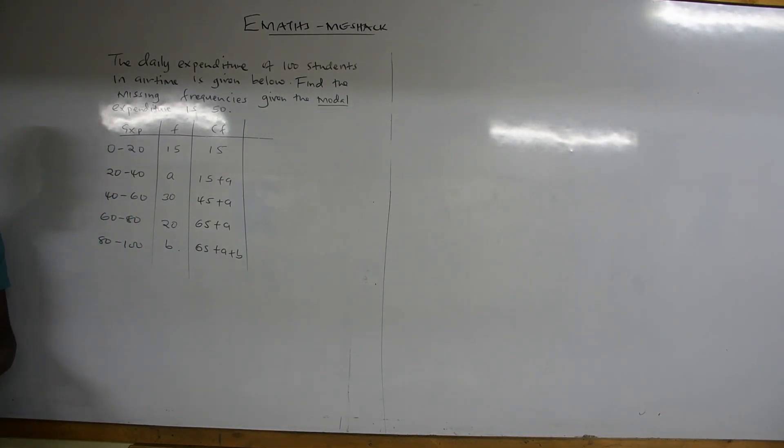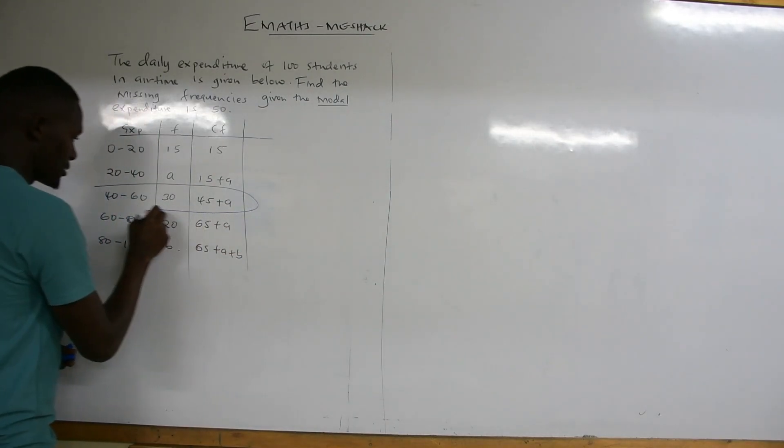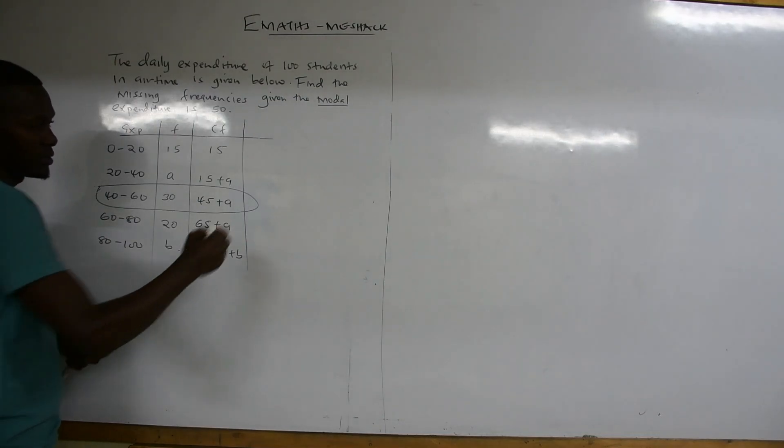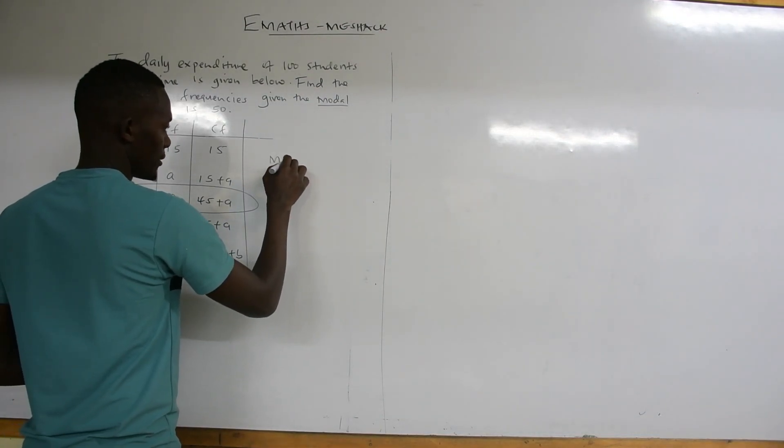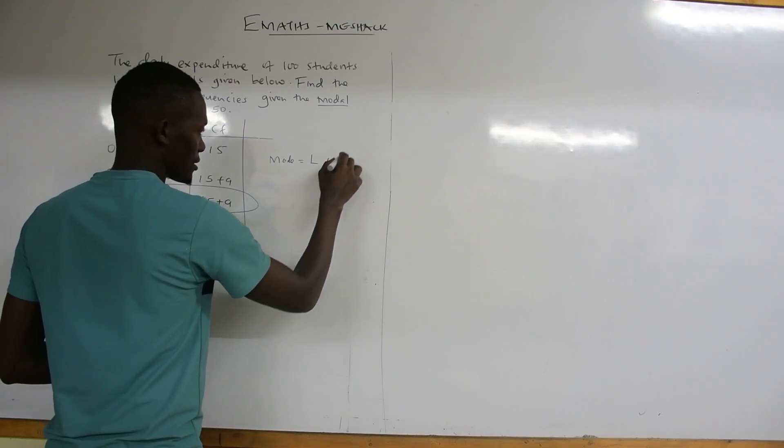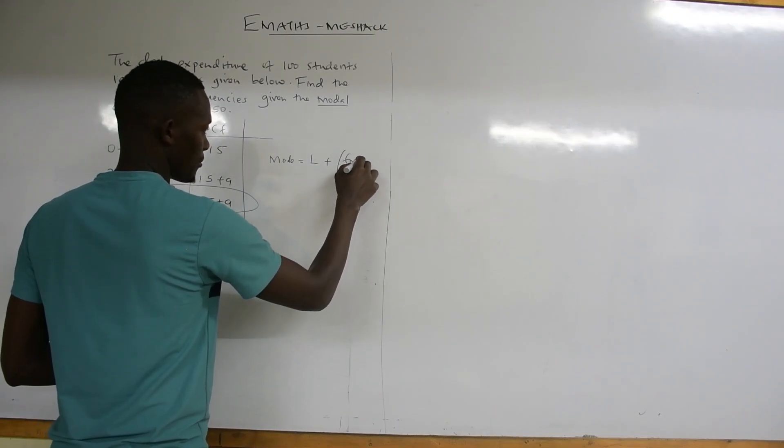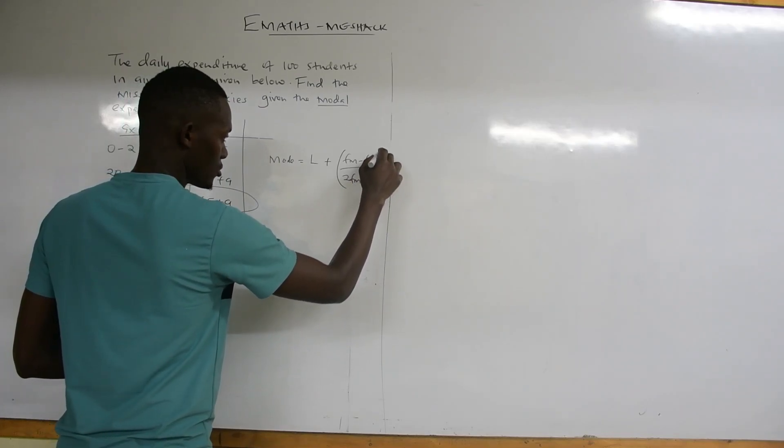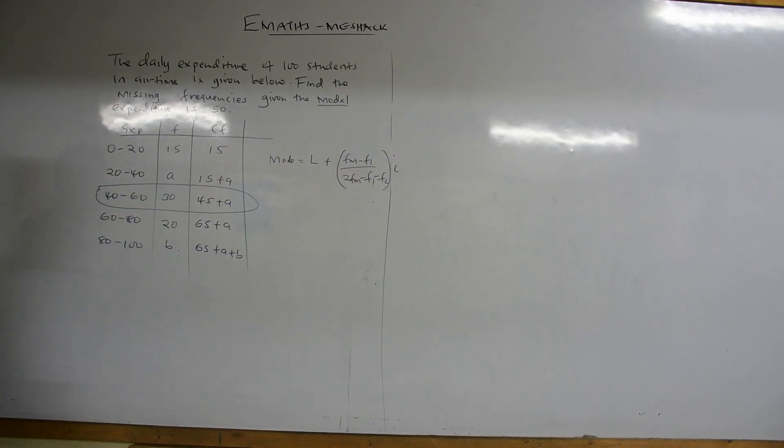We need to get the modal class, which is the class with the highest frequency. Since we don't know the value of A and B, we choose the class that has the highest frequency in our distribution. In our case, we shall work the class of 40 to 60 as our modal class. The formula of the mode is L plus, in brackets, Fm minus F1 over 2Fm minus F1 minus F2, then multiply by the interval.